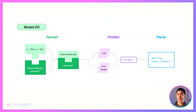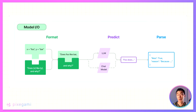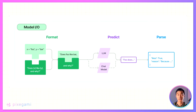Now, this doesn't seem like anything special at first, because you can also just do this with a string format, but you'll see why it's useful later. Next, it sends your prompt as an input to the LLM, and this can be any LLM of your choice. But in this example, we're going to be using OpenAI's ChatGPT. And once it does that, you'll get a string output. This is called the predict phase.